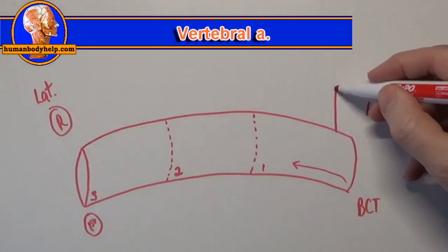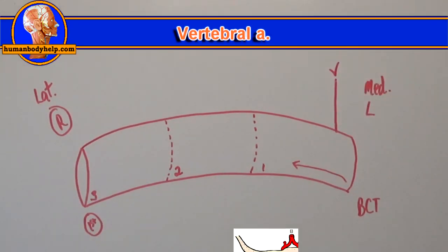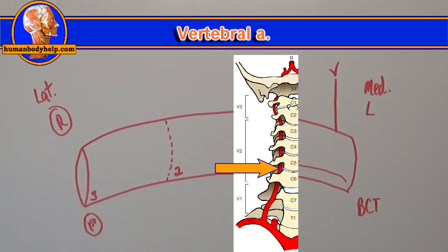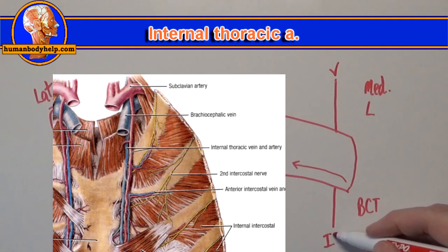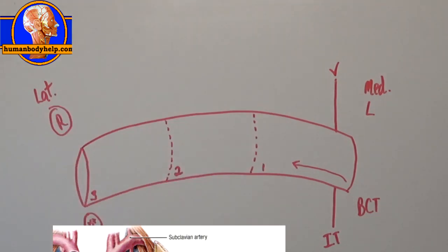The first branch, the vertebral artery, will pass up the neck running through the transverse foramen in the cervical spine. The second branch, the internal thoracic artery, runs down the inside of the anterior rib cage just lateral to the sternum.